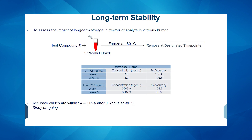To assess long-term storage in the freezer, we spiked test compound X in vitreous humor and stored them at minus 80 degrees Celsius. We removed samples at designated time points — in this example, you can see data from week 1 and week 3. We calculated accuracy, and values all fell within 94 to 115 percent. This study has been conducted up to 9 weeks so far and is still ongoing.